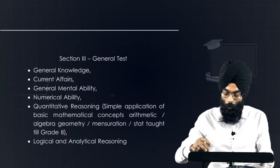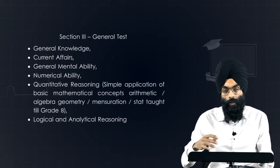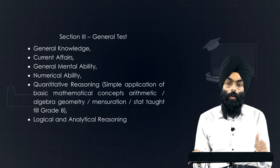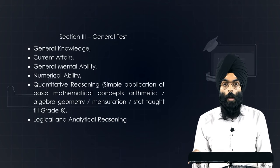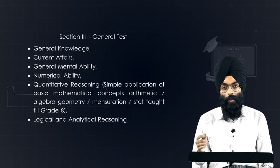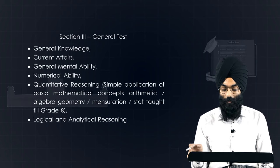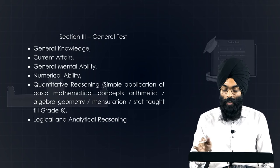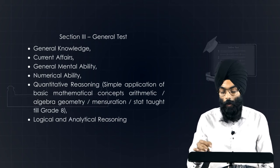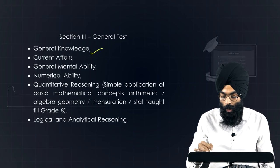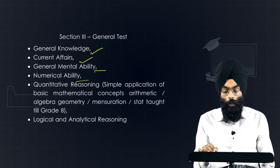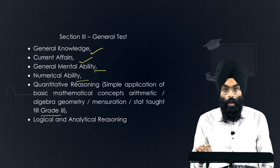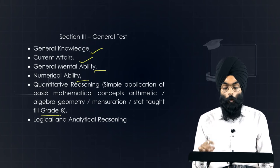The general test syllabus is based on current affairs, so if you're already reading the newspaper you will be comfortably positioned. If not, it's a good time to start from now. The general test criteria covers general knowledge, current affairs, mental ability, numerical ability, quantitative reasoning up to Grade 8 level, and logical and analytical reasoning.